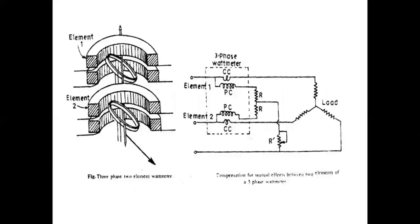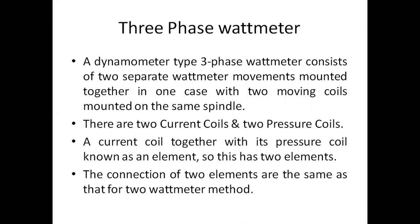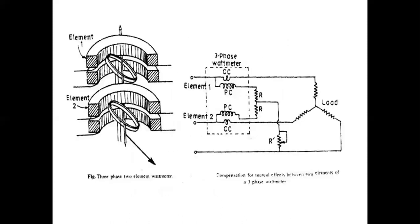There are two current coils and two pressure coils. Looking at the diagram, the first part and the second part represent the two single-phase watt meters connected on the same spindle. A current coil together with its pressure coil is known as an element, so this instrument has two elements. The connection of the two elements is the same as the two watt meter method — the current coils are connected to the load and the pressure coils are joined together and connected to the third phase.